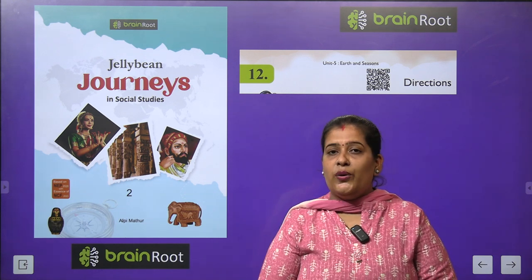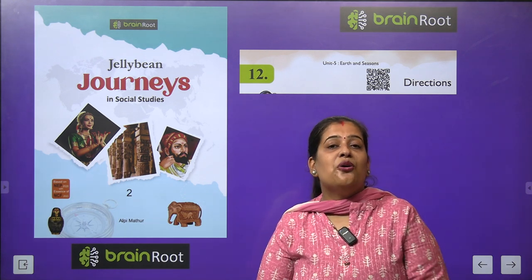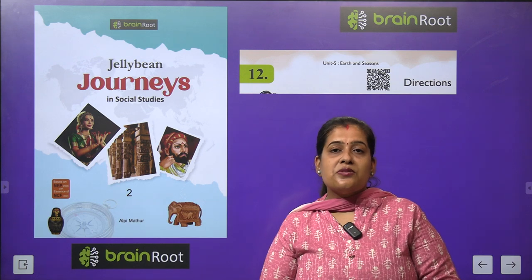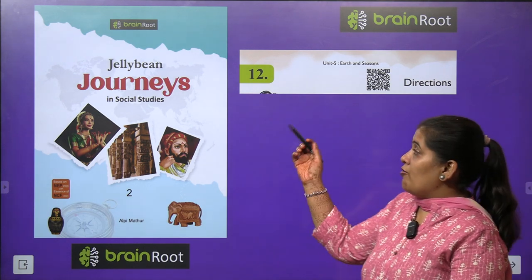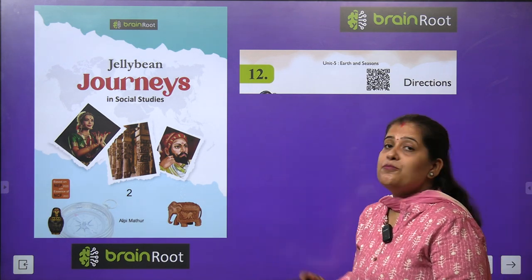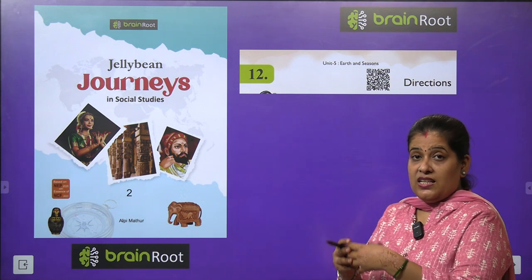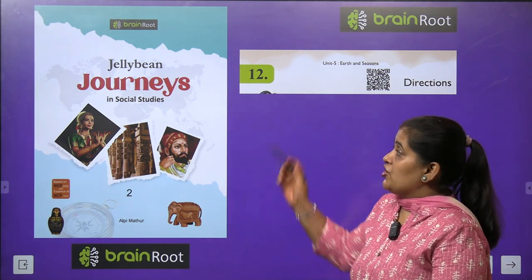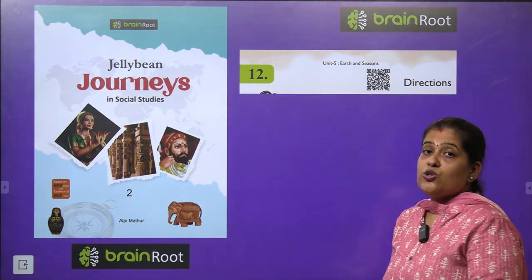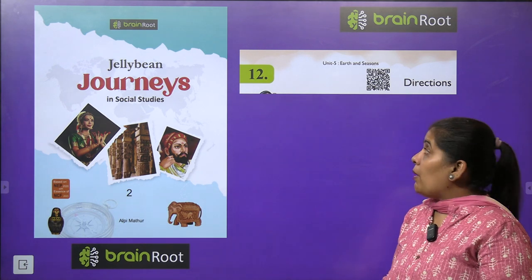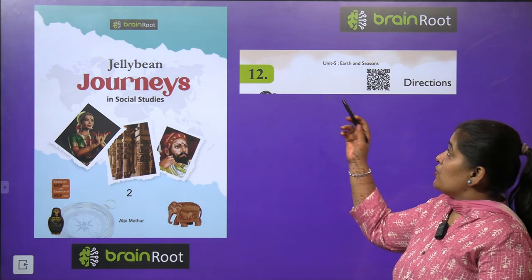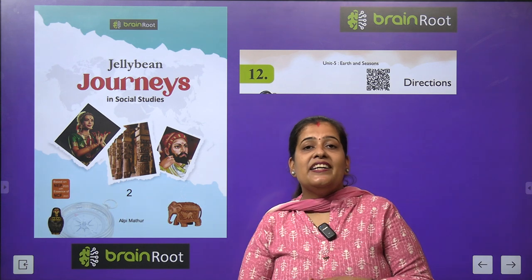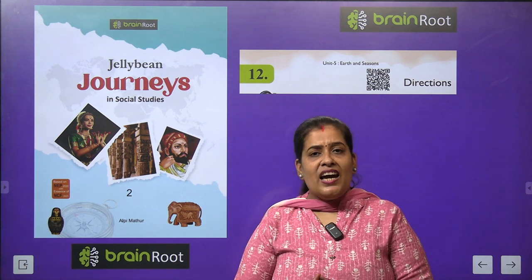Hello my dear kids, how are you? I hope you all are fine. So today we are going to start another chapter of our SST book by Bain Root series. The name of our book is Jelly Bean Journeys in Social Studies. And today we start chapter number 12 and the chapter name is Direction — Dishayen.